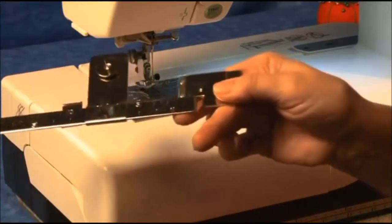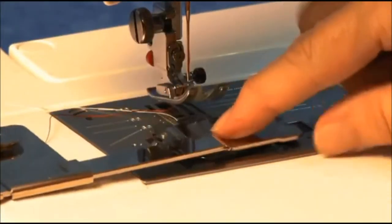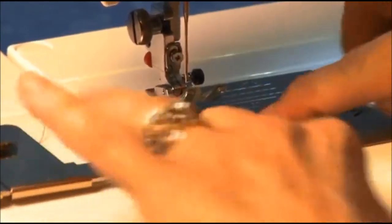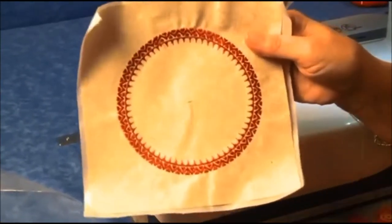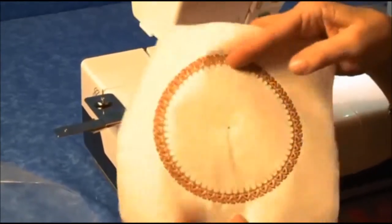To attach it to the machine, remove the clear bobbin cover plate and snap the circular sewing attachment into place. Prepare your fabric by marking the center of your circle with a water-soluble marker.